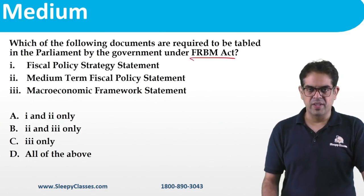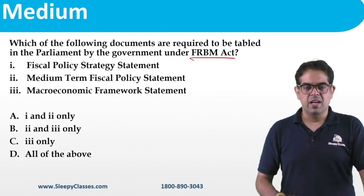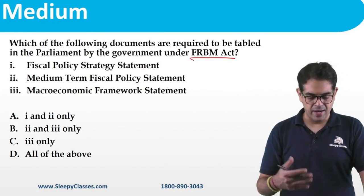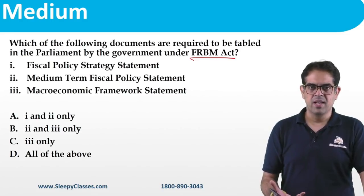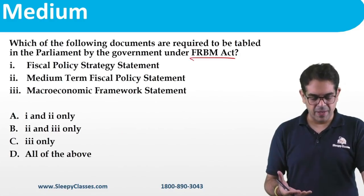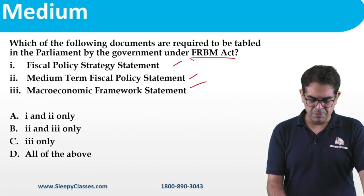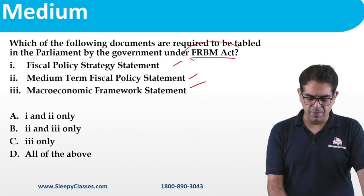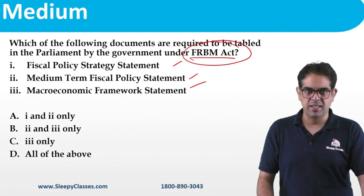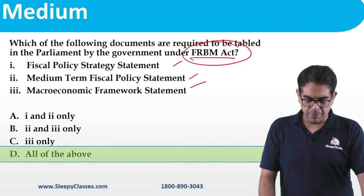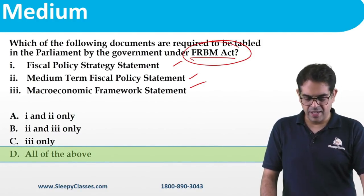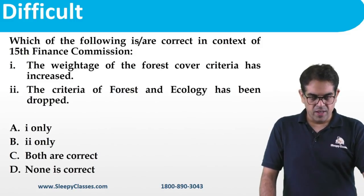Next is the FRBM Act. Due to COVID, the government violated FRBM norms, citing the need to increase spending during this difficult period. The government presents 3 statements to Parliament under the FRBM Act. FRBM has appeared in both Mains and Prelims repeatedly. All reports under the FRBM Act must be placed before Parliament.